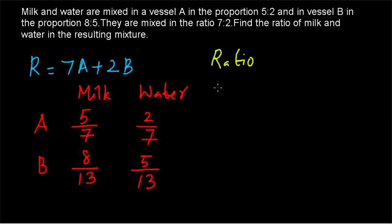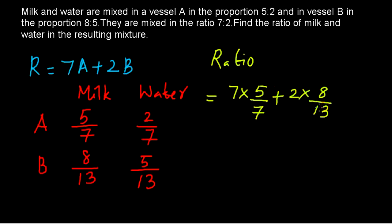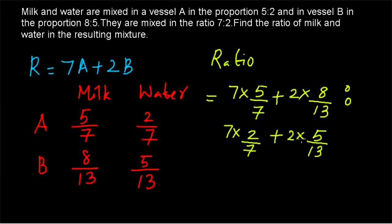The ratio equals (7A + 2B) of milk to (7A + 2B) of water. This is 7 × (5/7) — since 5/7 is the milk in A — plus 2 × (8/13) — since 8/13 is the milk in B — is to 7 × (2/7) — since 2/7 is the water in A — plus 2 × (5/13) — since 5/13 is the water in B. We can cancel 7 and 7 in both the numerator terms.